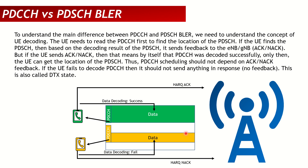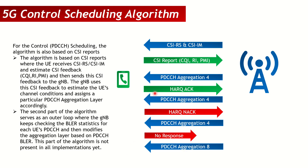However, if the gNodeB sent data and the UE did not respond with any HARQ ACK or HARQ NAK, it means the UE was not even able to decode the PDCCH — that is why it sent no response. When the gNodeB sent scheduling with PDCCH aggregation level 4 and received no response, it concludes the UE could not decode the PDCCH. In this scenario the gNodeB should modify the PDCCH scheduling to a higher, more robust aggregation level.